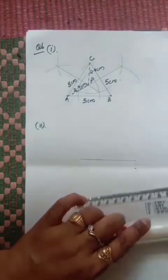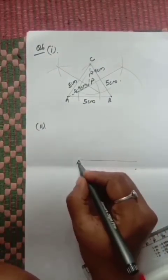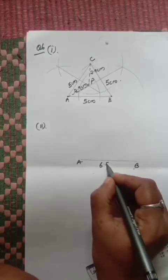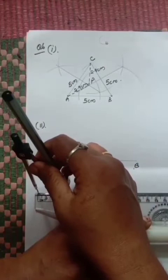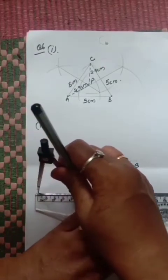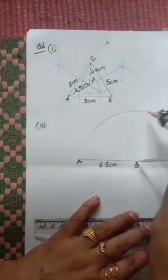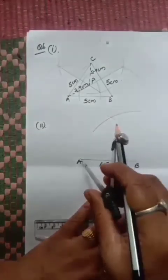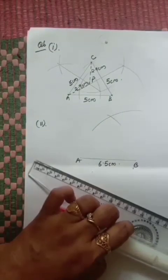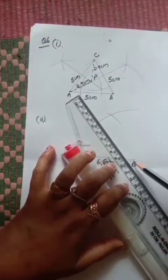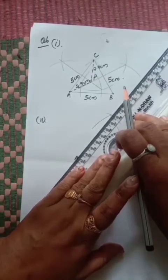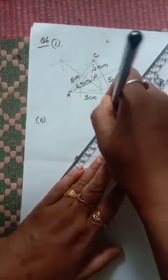Question 6, Part 2: Draw AB = 6.5 cm. Take 6.5 cm in compass and make arcs from A and B — they intersect at one point; join that point to A and B. That is the required equilateral triangle ABC. All sides are equal and all angles are 60° each.